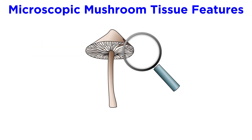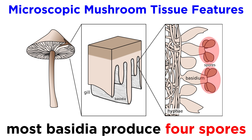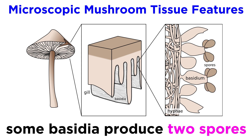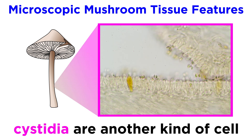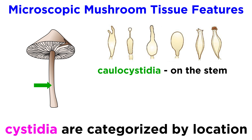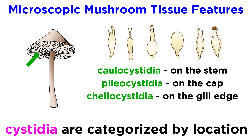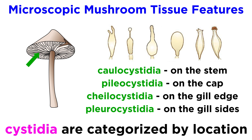Other than the spores themselves, mushrooms have unique microscopic features associated with different tissue types. Along the hymenium, basidiomycetes possess spore-producing cells called basidia, which can belong to a number of structural types. Generally, basidia produce four spores, but notable species and fungal lineages produce two spores per basidium. Along different tissue types, there are cells unrelated to spore production called cystidia. Cystidia are categorized depending on their location: caulocystidia if on the stem, pileocystidia if on the cap, cheilocystidia if on the gill edge, and pleurocystidia if on the gill sides.